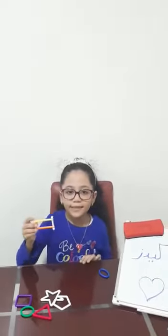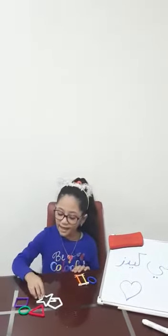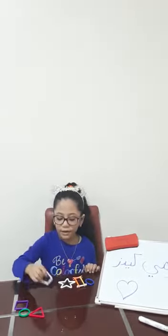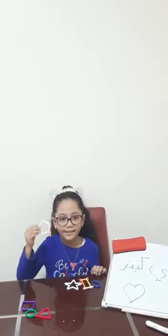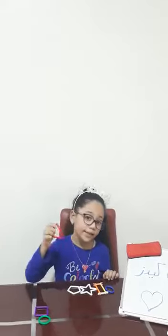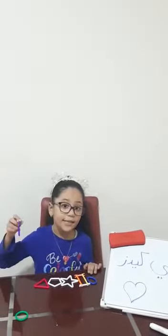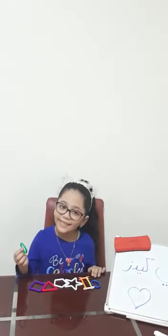Now let's put them all together. What is this? Yes, excellent — it's an oval! And what is this? Yes, excellent — it's a rectangle! What is this? Yes, you're amazing — it's a star! And what is this? You're right — it's a pentagon! What is this? You're right — this is a triangle! And what is this? This is a square, excellent! And what is this? This is a circle!